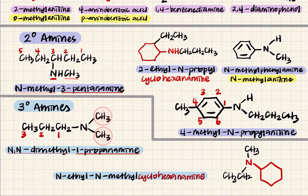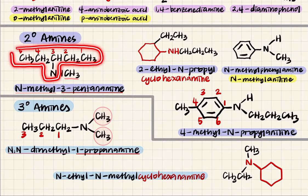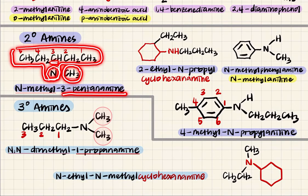For secondary and tertiary amines, the nitrogen is attached to two or three carbons respectively. First find the longest carbon chain — here it's 5 carbons, so pentanamine. The amine is attached to carbon number 3, giving 3-pentanamine. Then circle the substituents: methyl is attached to your nitrogen, so it will be N-methyl-3-pentanamine.